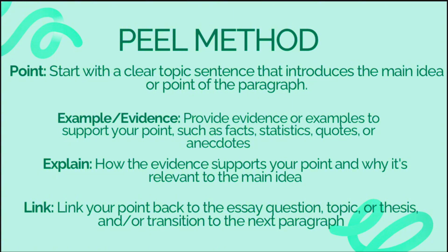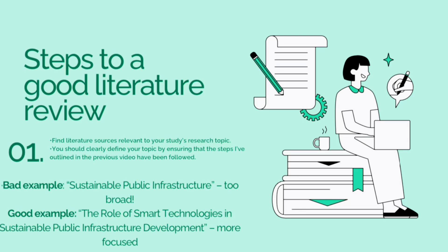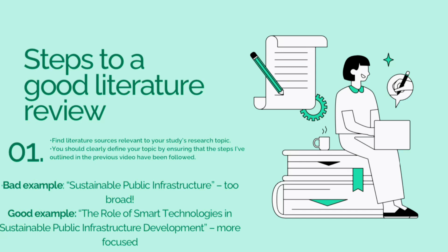Now let's go through the steps for conducting a literature review. The first step is to find literature sources that are very relevant to your research topic. In episode two we went through the process of choosing a research topic: it needs to be of interest to you and relevant to your field of study.